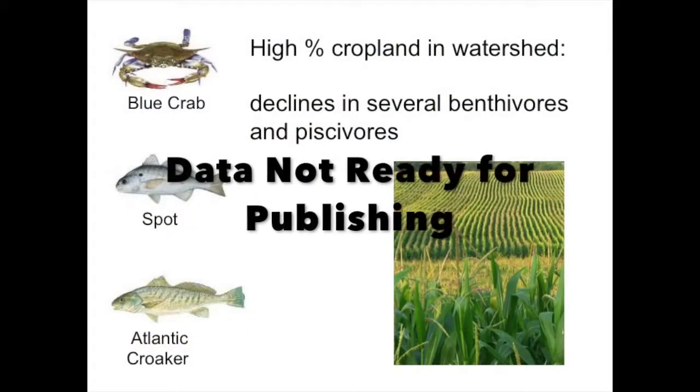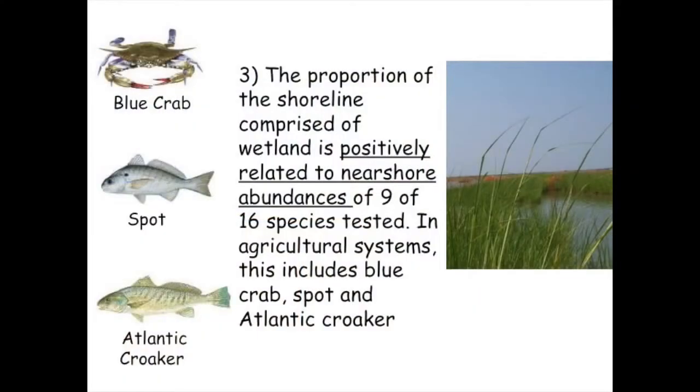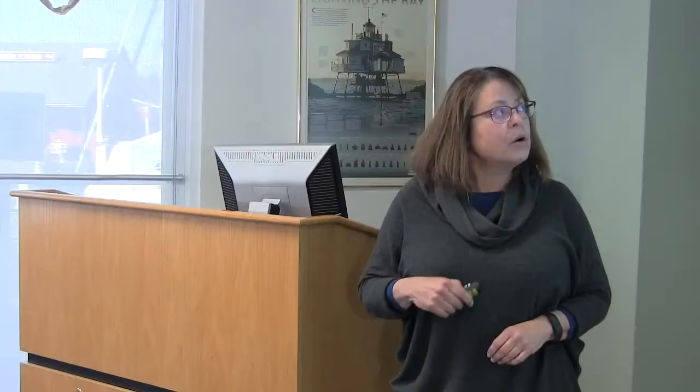Here are the data, and it's pretty clear that as the percent of cropland in the watershed goes up, the abundances of a number of species decline. The abundances of more of these species, though, are positively related to the amount of wetland in the watershed.